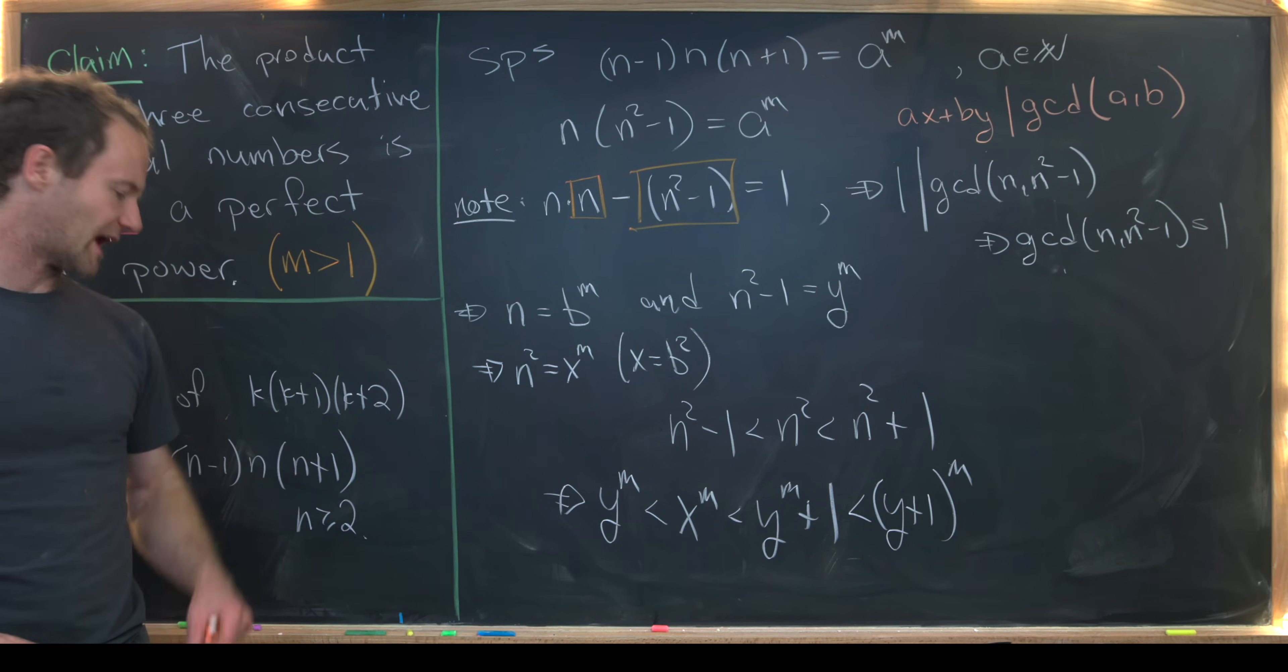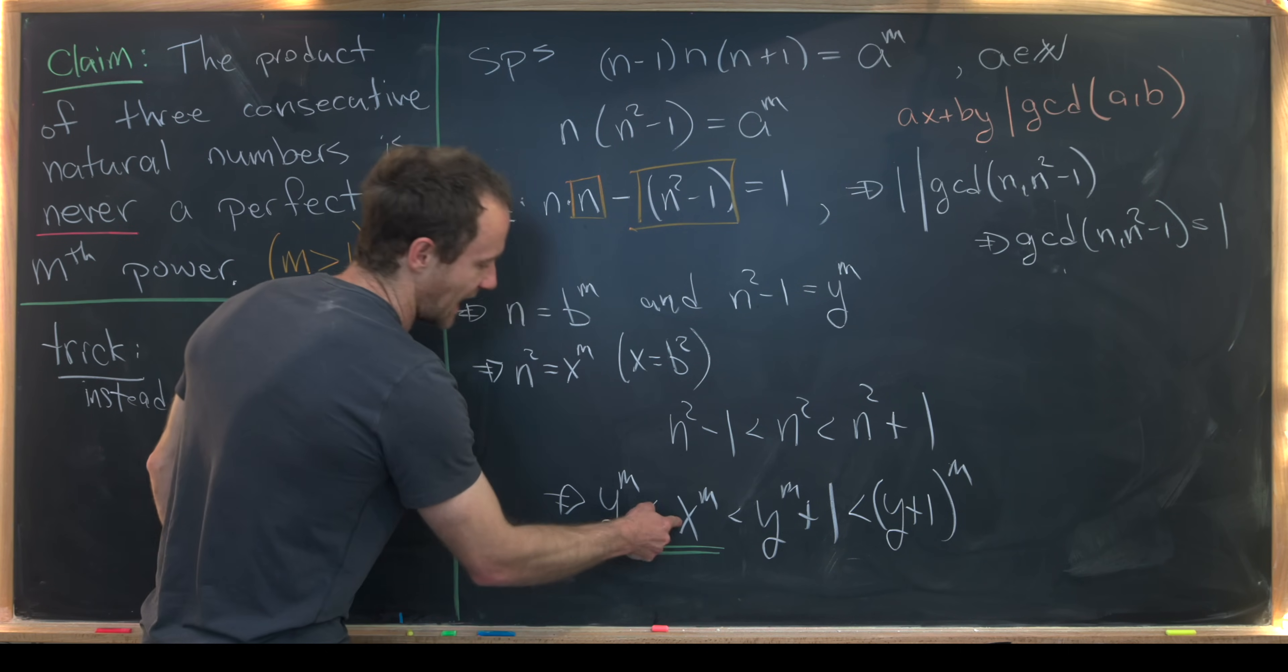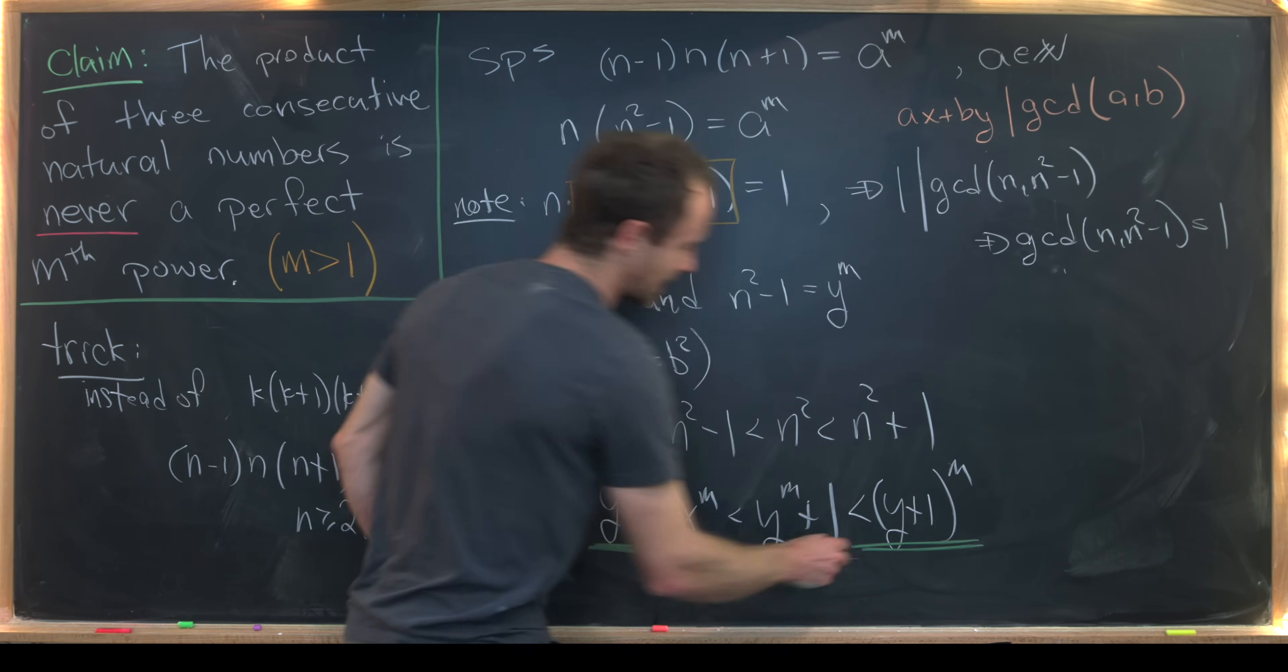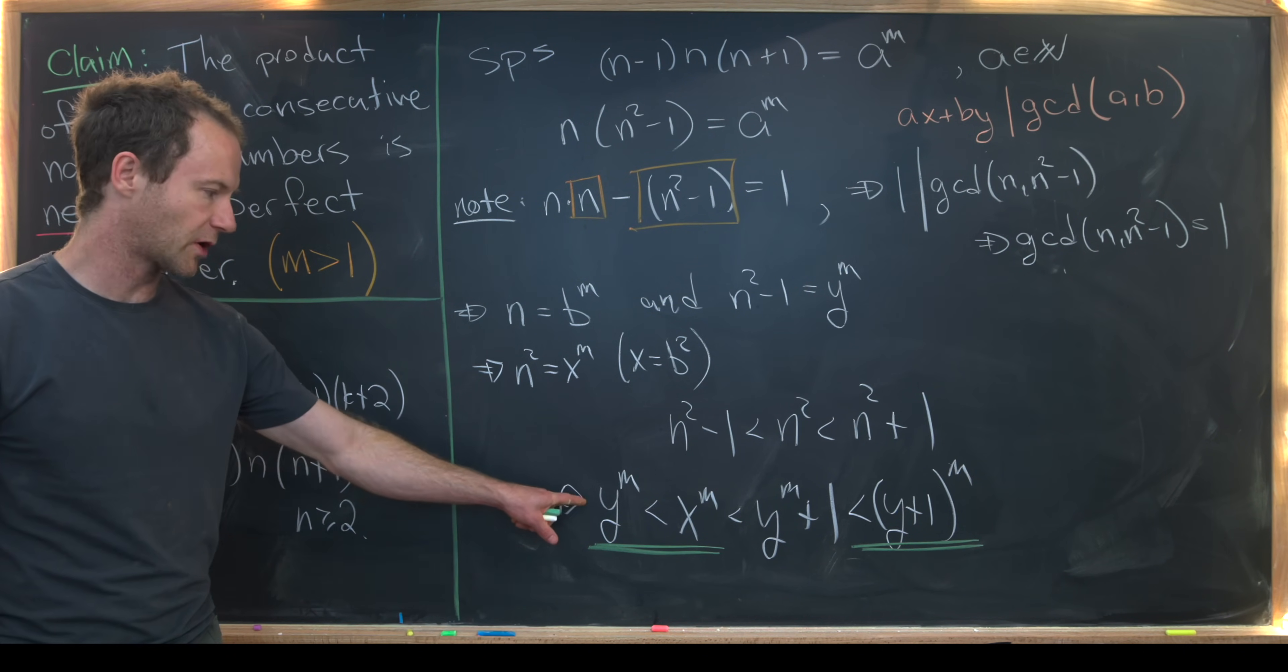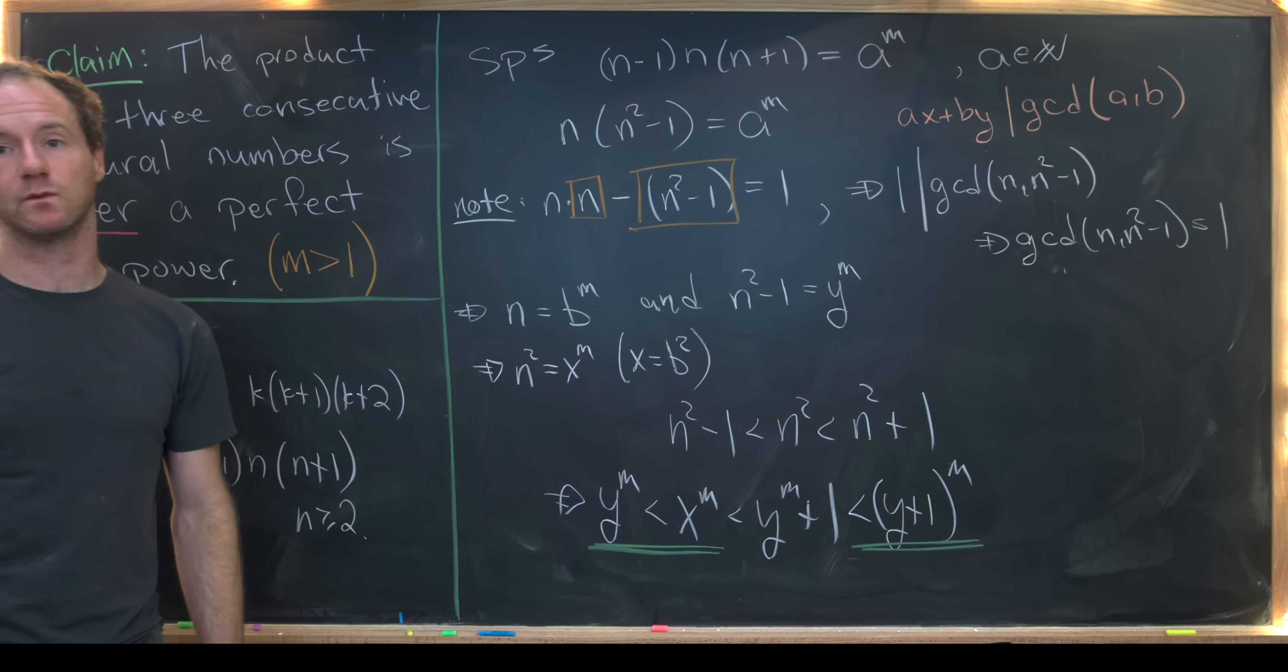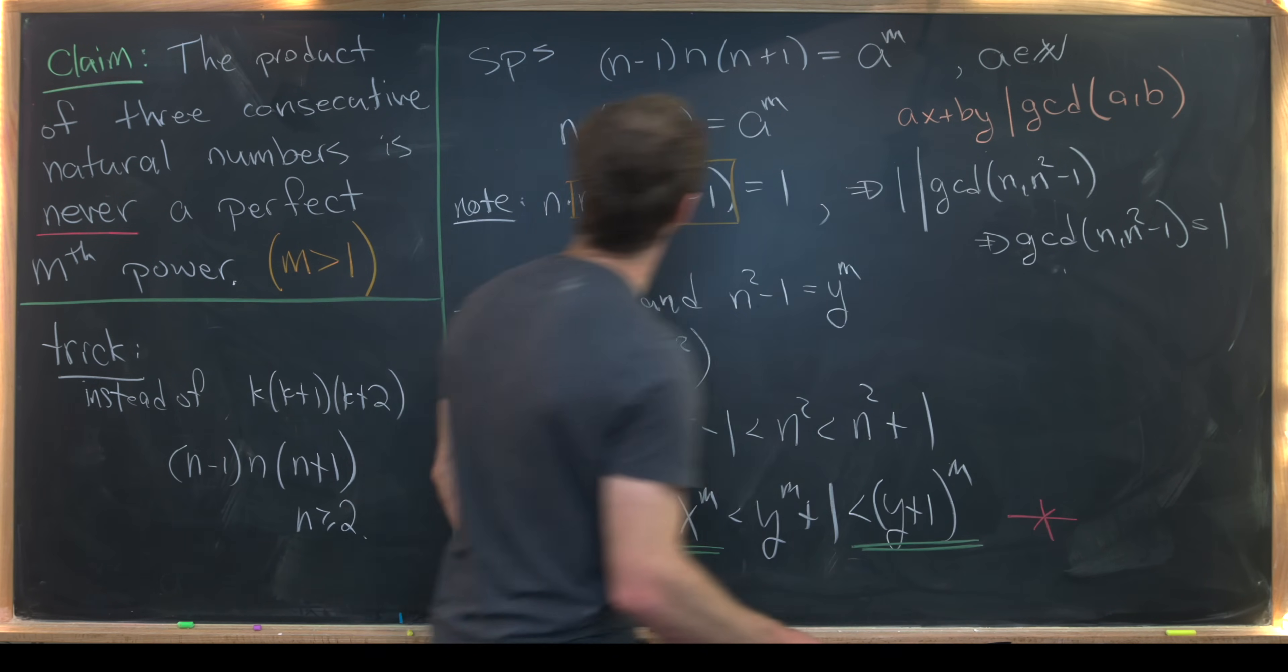So let's see why we have a problem. Notice that we have pinned x to the m strictly between two consecutive nth powers. But that's impossible because there's no perfect nth powers between y to the m and y plus 1 to the m. Like I said, those are consecutive. So that brings us to a contradiction.